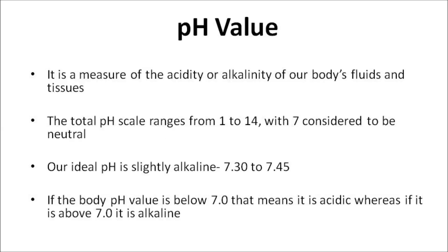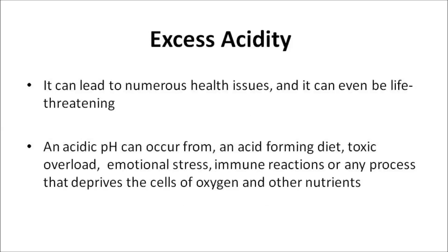Next, we'll talk about pH value. pH stands for power of hydrogen. It's a measure of the acidity or alkalinity of our body's fluids and tissues. The total pH scale ranges from 1 to 14, with 7 considered to be neutral. Our ideal pH is slightly alkaline, 7.3 to 7.45. If the body pH value is below 7, that means it's acidic, whereas if it's above 7, it's alkaline.